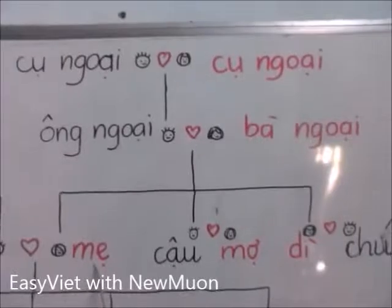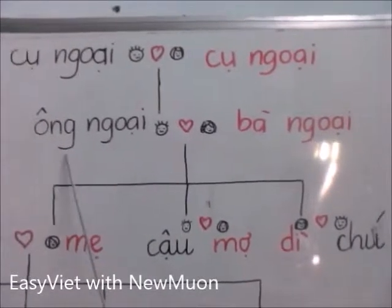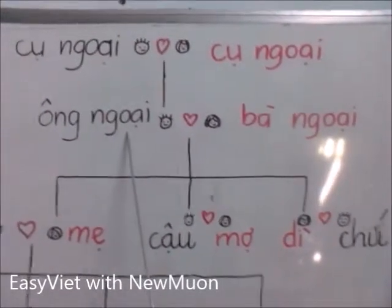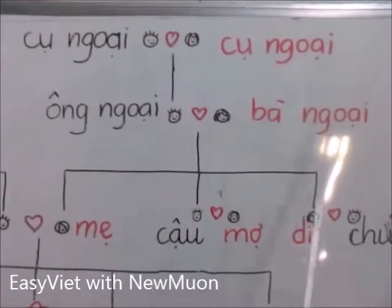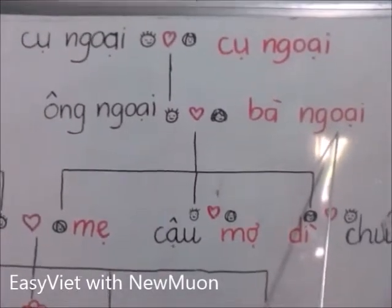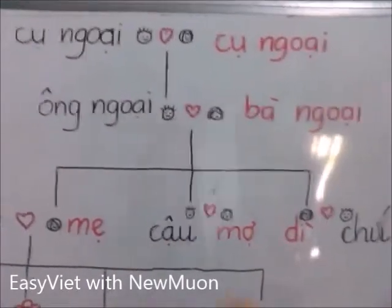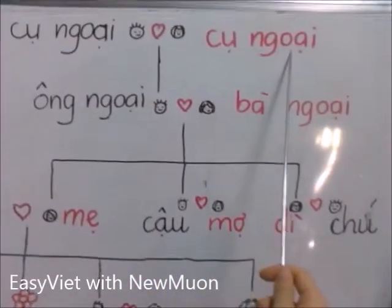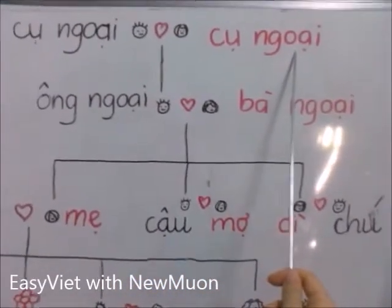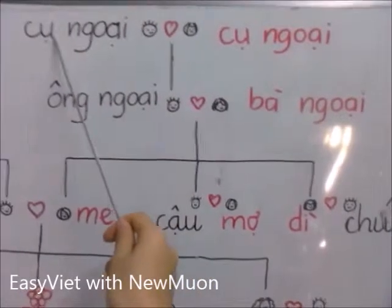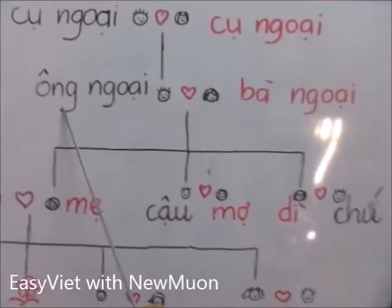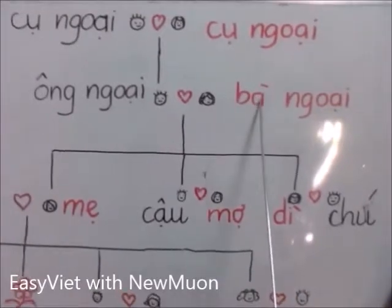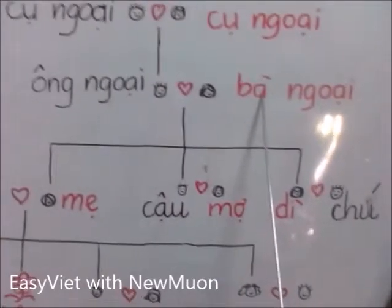In my mother's side, my grandfather is Ông Ngoại and my grandmother is Bà Ngoại. My great-grandparents are Cụ Ngoại. My great-grandfather is Cụ Ông and my great-grandmother is Cụ Bà.